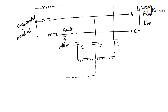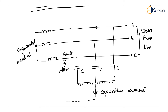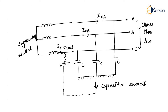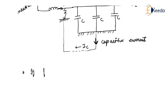When a fault occurs on any of the phases, the capacitive fault current ICA, ICB flows into the ground. The fault current IF and capacitive current IC — if the fault current exceeds 4 to 5 amperes, it is sufficient to maintain the arc.